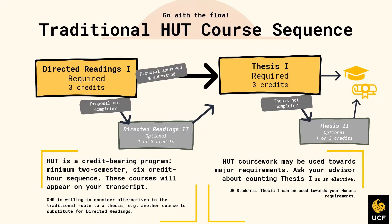HUT is a credit-bearing program. Directed Readings 1 and Thesis 1 are both three credits each. Students who take Directed Readings 2 or Thesis 2 can take each for either one or three credits depending on their needs. The minimum total is six credits. For university honors students, HUT coursework may count toward honors requirements, and for everyone it may be used toward major requirements — especially Thesis 1, which many majors accommodate.